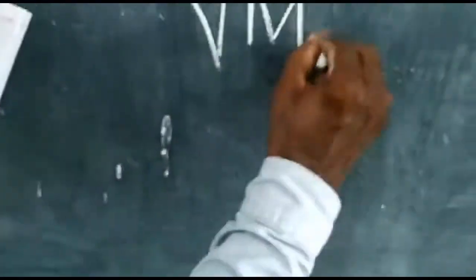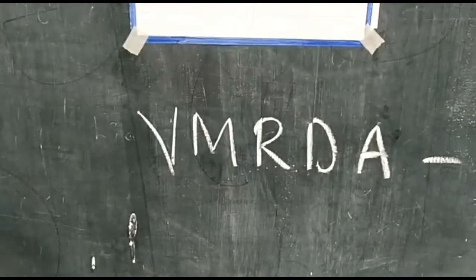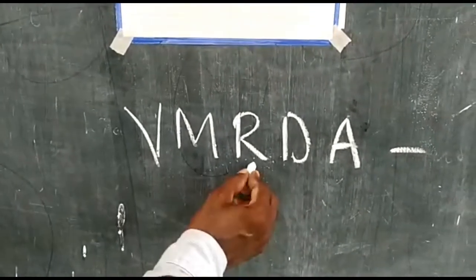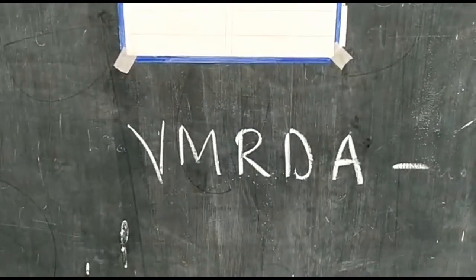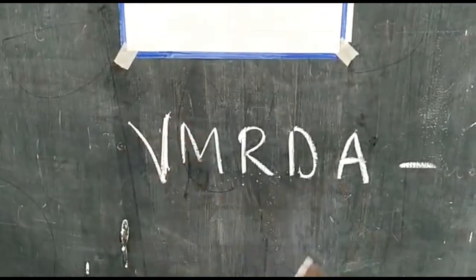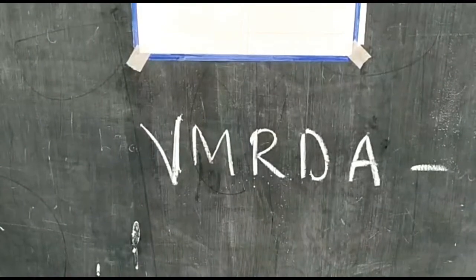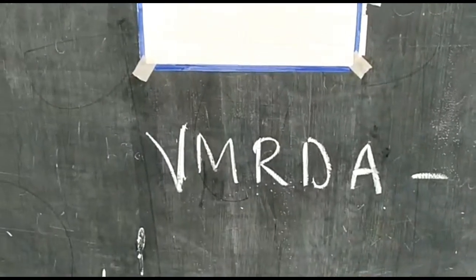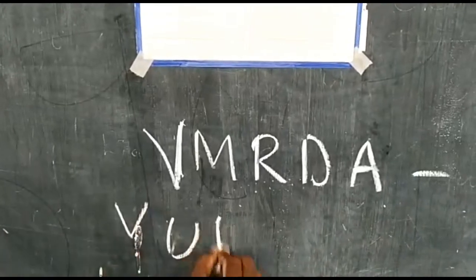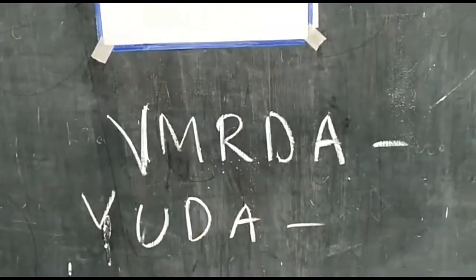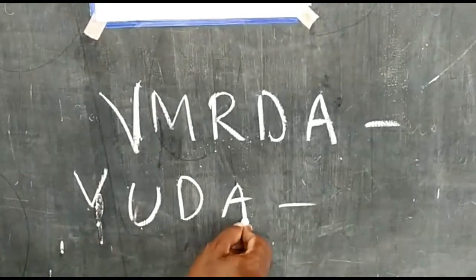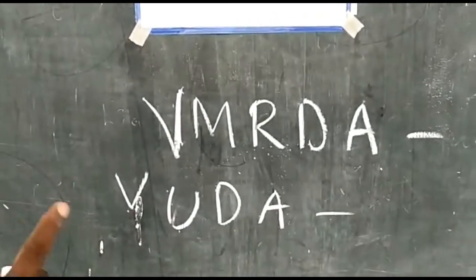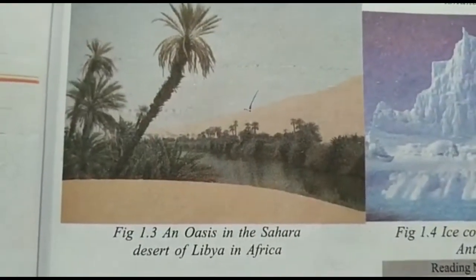Look at VMRDA here. VMRDA means Visakhapatnam Metropolitan Region Development Authority, located in Siripuram, Visakhapatnam. VUDA means Visakhapatnam Urban Development Authority, also in Visakhapatnam. This is explaining about the Ramakrishna Beach.